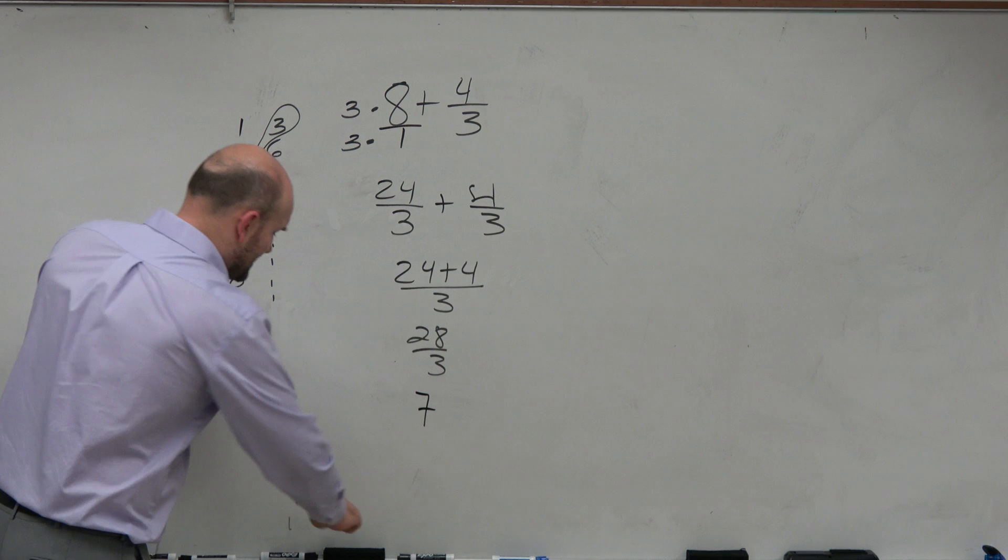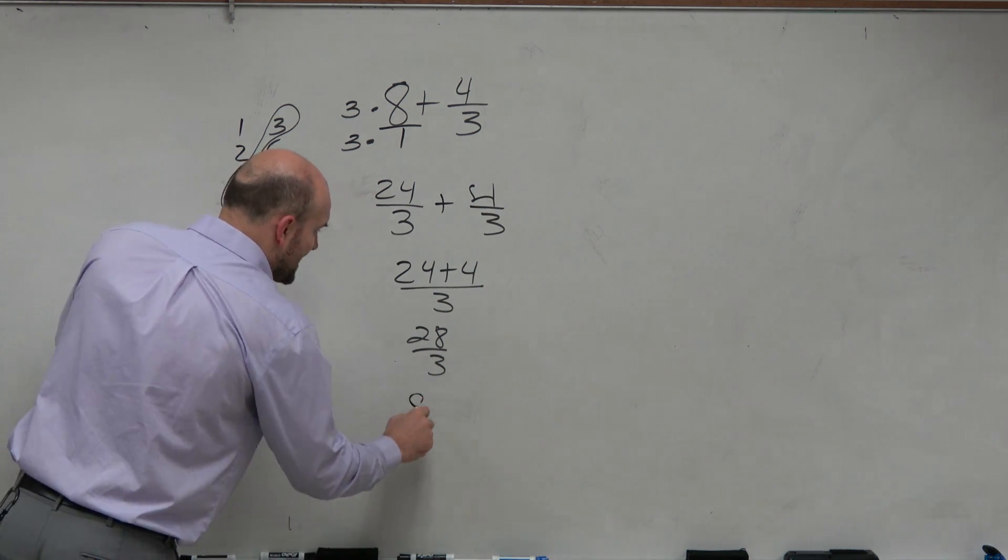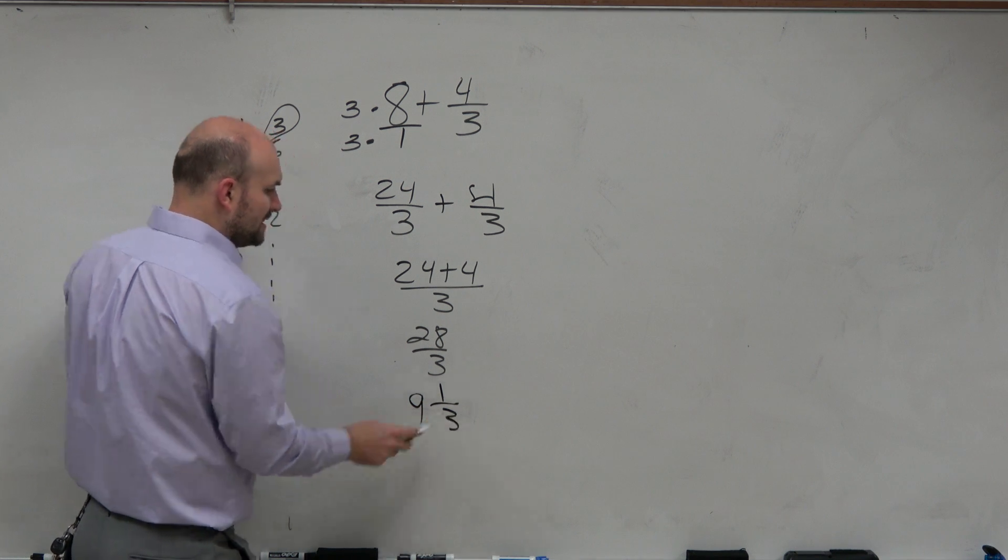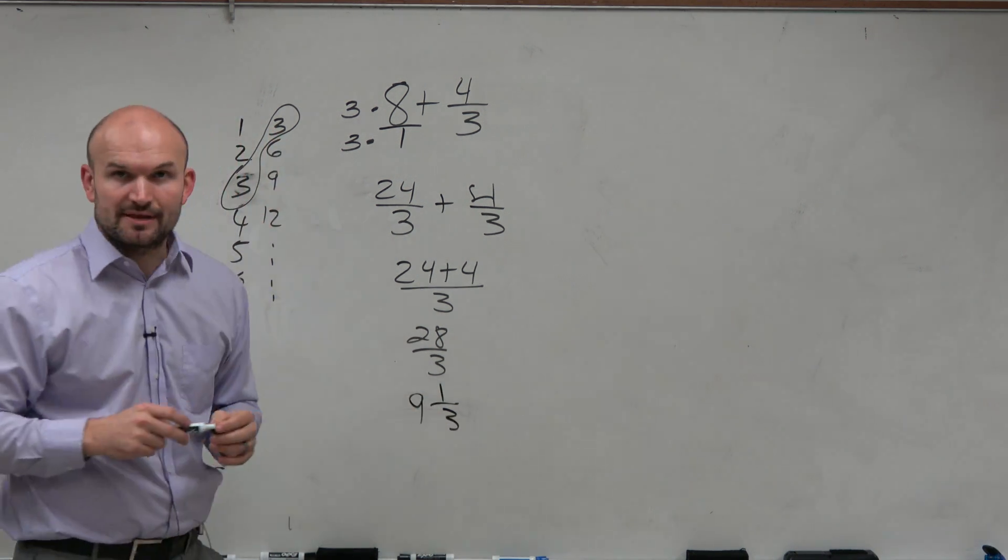3 goes into 7, not 7 whole times. It definitely goes in there 7. We could say it goes in there 9 times, and with the remainder of 1. So really, 9 and 1 third is equivalent to 28 thirds.